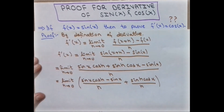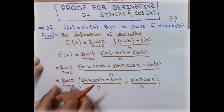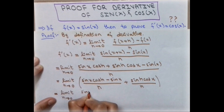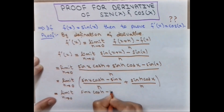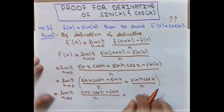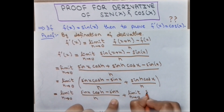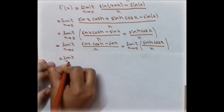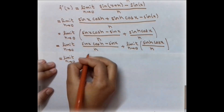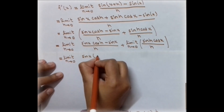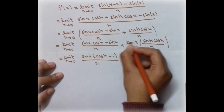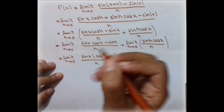We can apply the limit to both factors separately. In the first factor, we take sin(x) as a common factor and are left with [cos(h) minus 1] over h. In the second factor, cos(x) is not dependent on h, so we write cos(x) outside the limit, leaving sin(h) over h inside the limit.